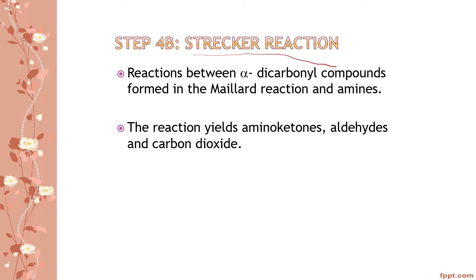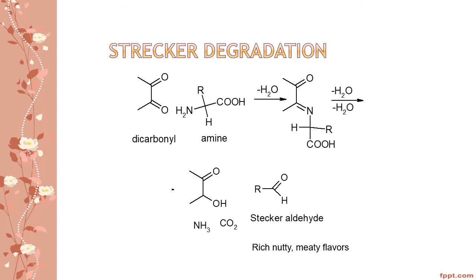Concurrent with step 3a is step 4b, the Strecker reaction. The Strecker reaction is a reaction between an alpha-dicarbonyl compound formed in the Maillard reaction and amines, yielding amino ketones, aldehyde, and carbon dioxide. In Strecker degradation, the dicarbonyl reacts with an amine, loses water, and produces the Strecker aldehyde, plus ammonia and carbon dioxide. This Strecker aldehyde gives a rich, nutty, or meaty flavor.